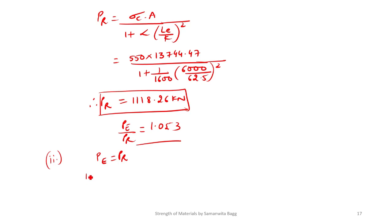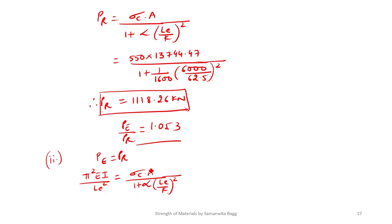Setting PE = PR: π²EI / LE² = sigma_c into A / (1 + alpha into (LE/K)²). Substituting all known values and leaving LE as the unknown, solving gives LE = 7453.56 mm.